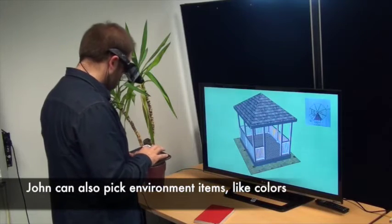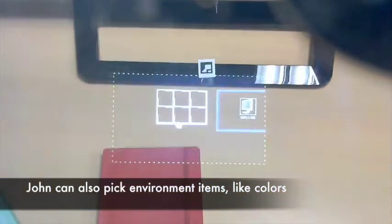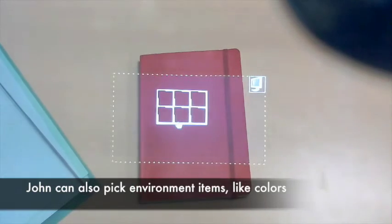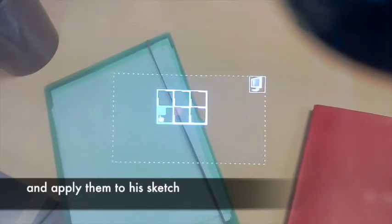John explores some color options for his design. The glue view, Gluon, and glue board are combined to create a color picking tool, which John uses to choose colors from surrounding objects and apply them to the model.